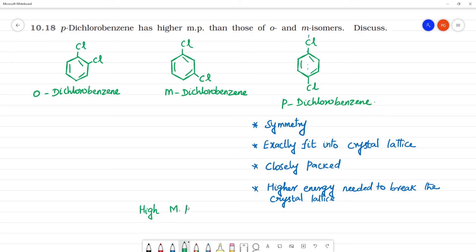High melting point and also lower solubility. Low solubility. Which one? Para isomer. Para isomer, due to this reason, will have high melting point.